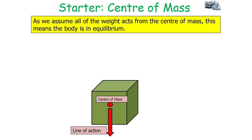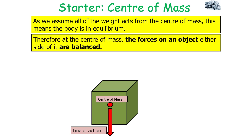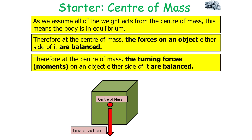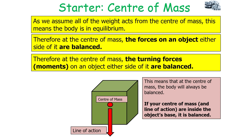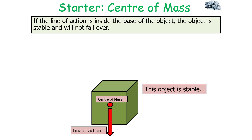As we assume all of the weight acts from the centre of mass, this means the body is in equilibrium. Therefore at the centre of mass, the forces on an object either side of it are balanced, and the turning forces or moments on an object either side of it are also balanced. This means that at the centre of mass the body will always be balanced. So if the centre of mass and the line of action of the weight are inside an object's base, it means it is balanced.